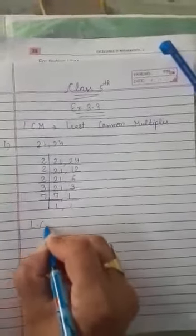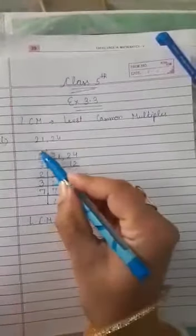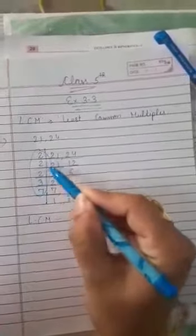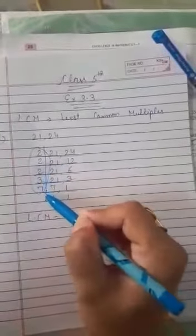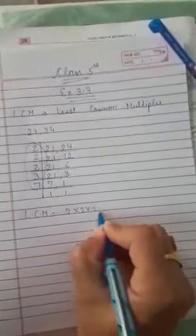Then write downside LCM is equal to 2 multiply by 2 multiply by 2 multiply by 3 multiply by 7. 3 times 2, then 3 multiply by 7. When we multiply then our answer came 168.